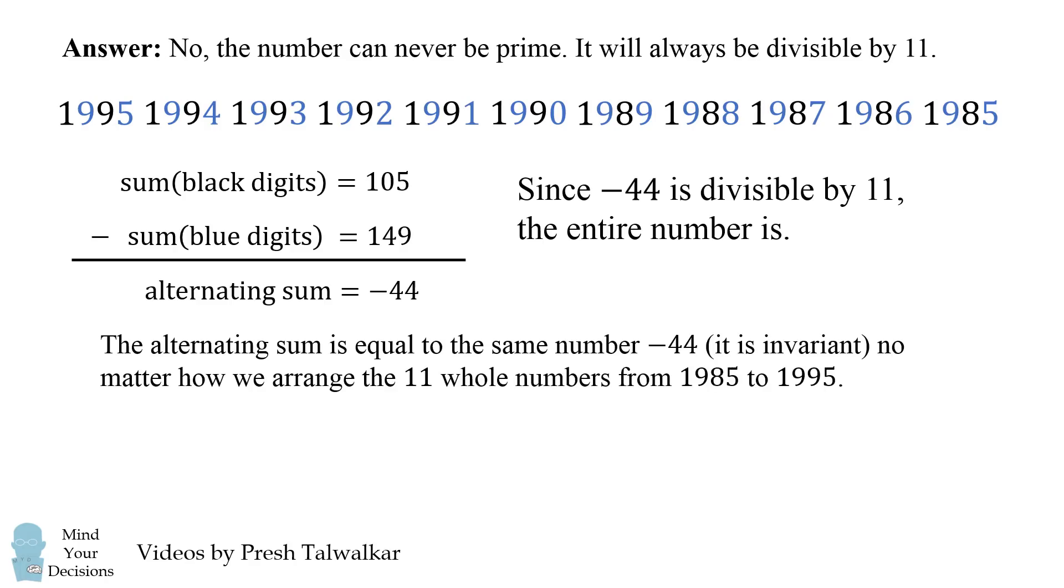In fact, the alternating sum will be equal to negative 44, it will be invariant, no matter how we arrange the 11 whole numbers from 1985 to 1995.